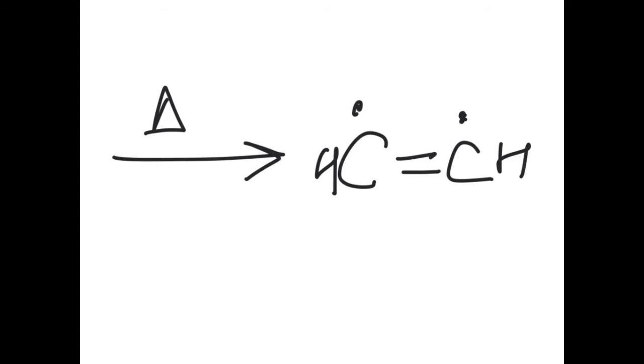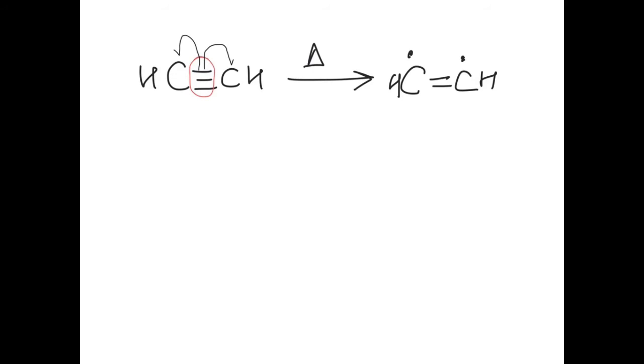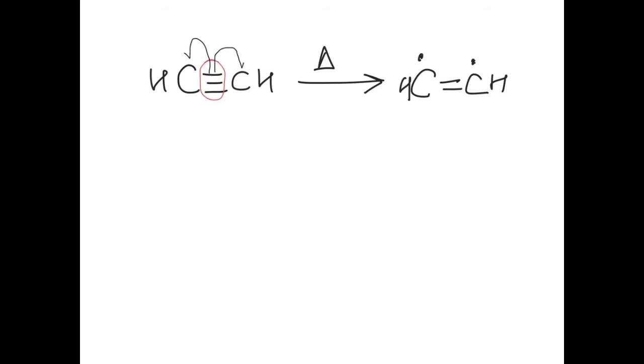When heated to a very high temperature, one of these bonds breaks and one electron goes to this carbon atom and the other electron goes to this carbon atom. And that's how we get that free radical: C double bond C H, and each carbon atom has an electron. Now how many molecules did we have? Three, right? So they will arrange themselves in this fashion.